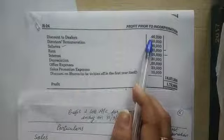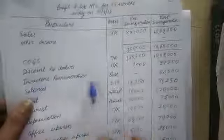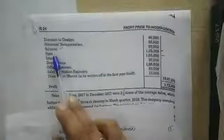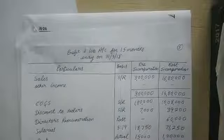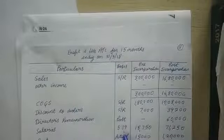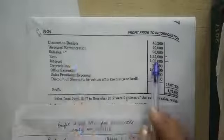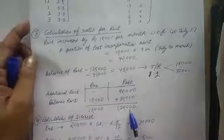Discount to dealers — nothing specific mentioned in the question, so ₹46,200 is divided in the sales ratio. Director's remuneration of ₹60,000 goes directly into post-incorporation. Salaries ratio was already calculated as 5:19, so total salaries of ₹90,000 are divided in the ratio 5:19. Rent: as calculated, pre-incorporation rent is ₹15,000 and post-incorporation rent is ₹1,20,000.